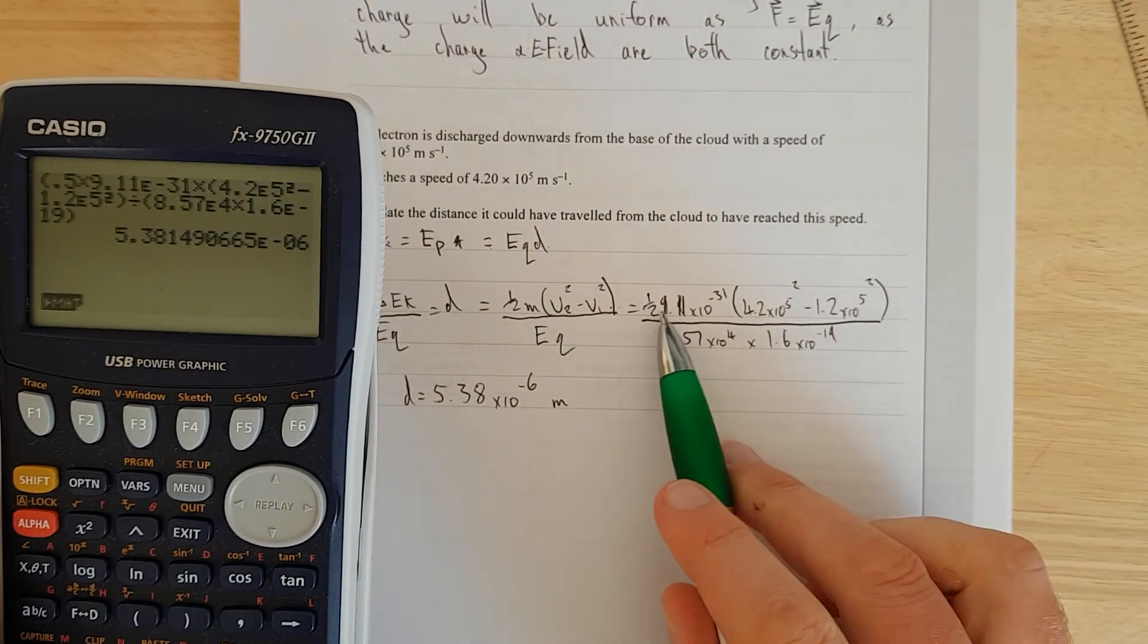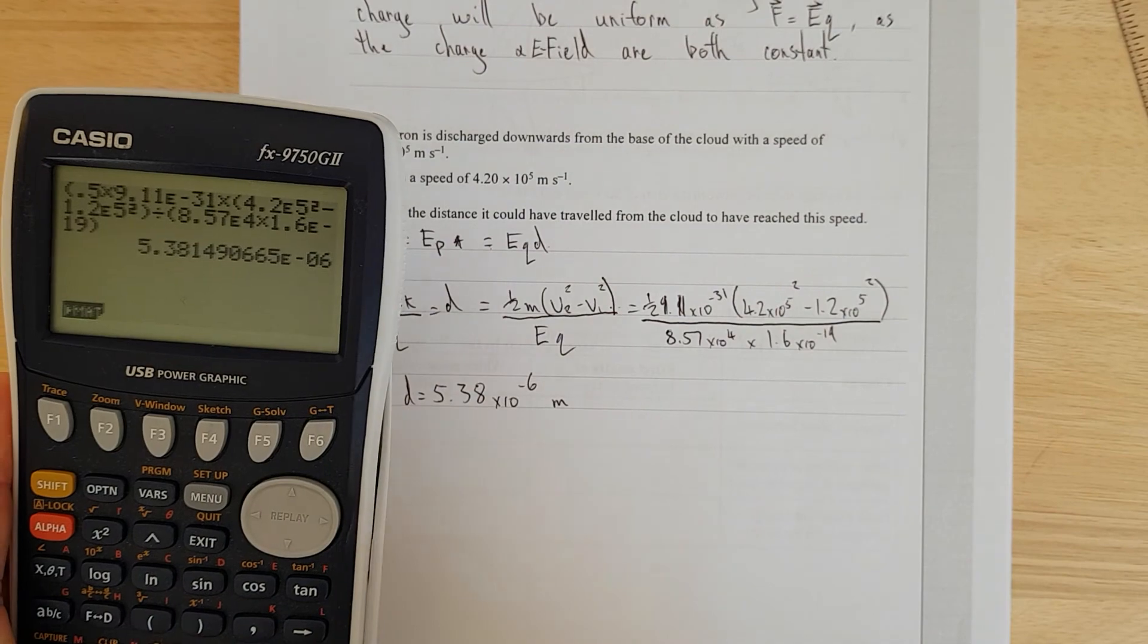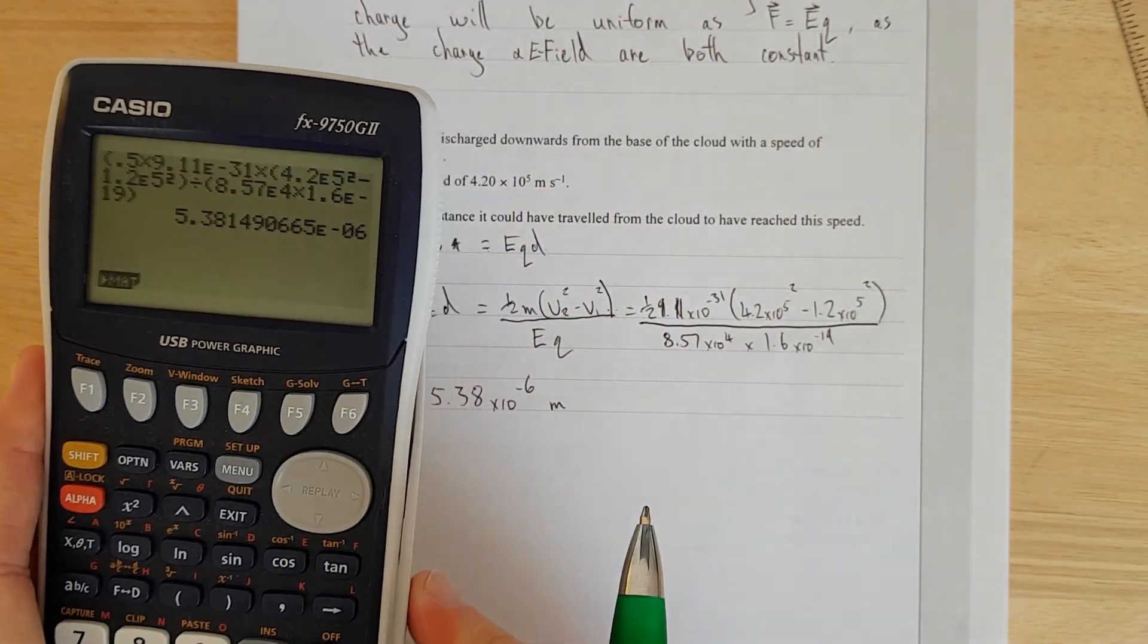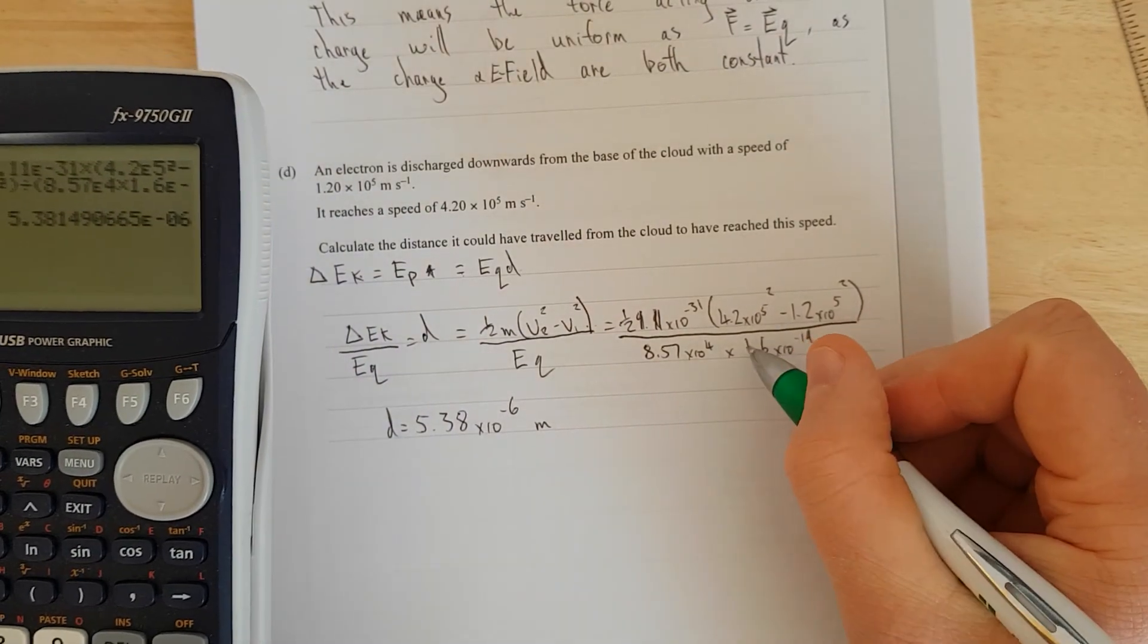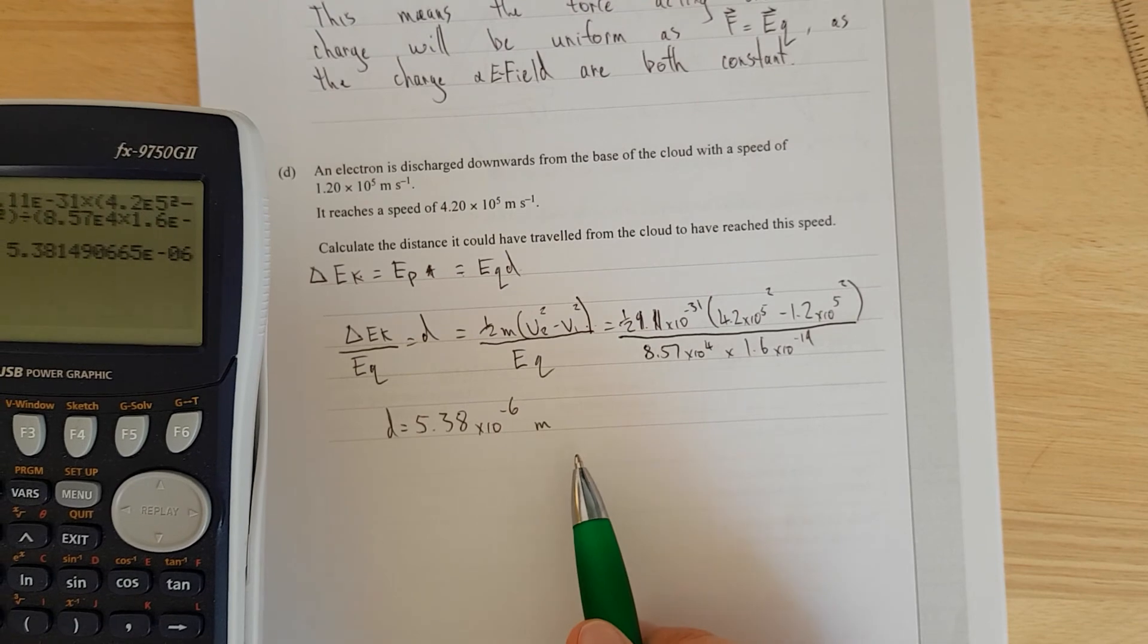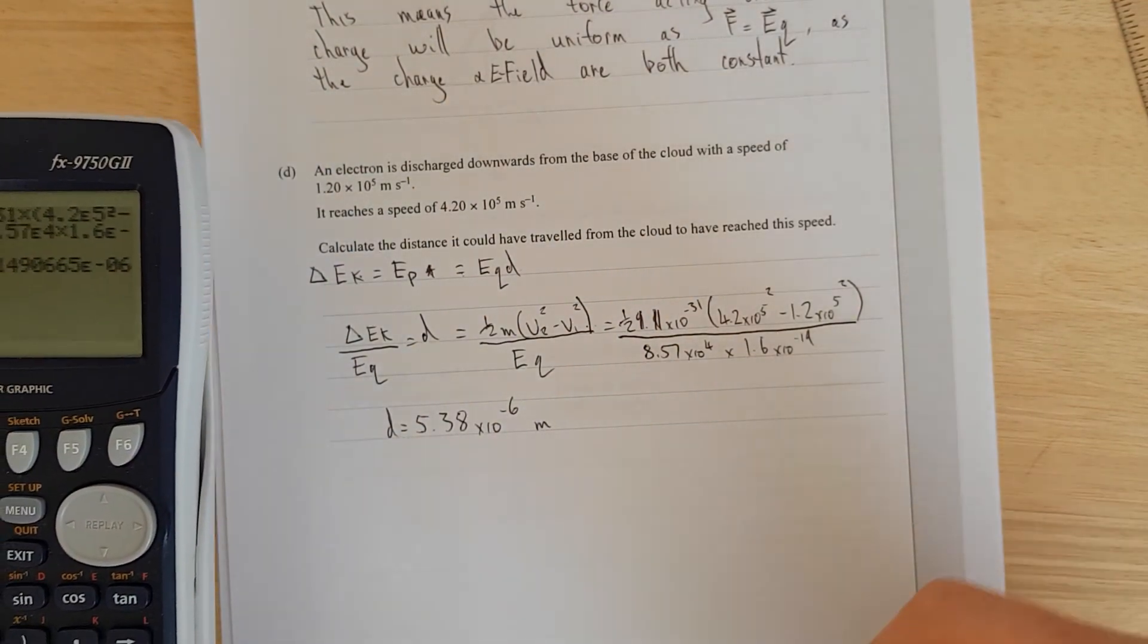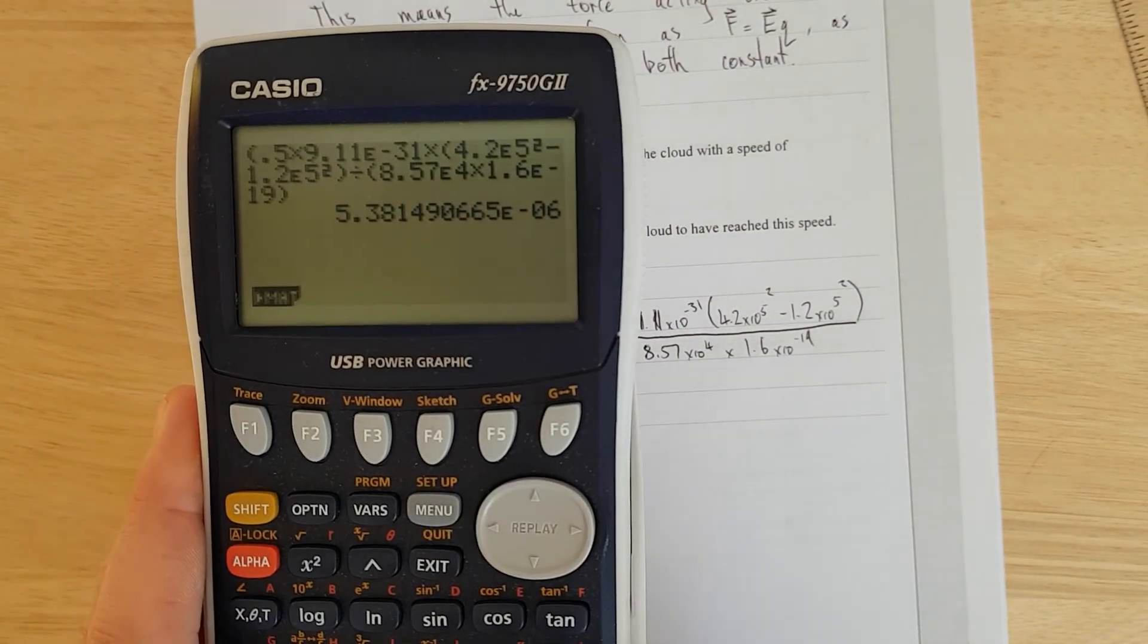I did notice that I wrote down the mass of the electron wrong, 9.11 times 10 to the negative 31. When you're obviously doing this exam, you don't rush it like me because you're not trying to make a video. Take your time, check all your numbers. I left the negative out for the charge because it doesn't really add to the question. It's just a scalar distance. It's not asking for the displacement. The displacement would be downwards, which would be a negative distance. There's the working that I chucked on my calculator as well.